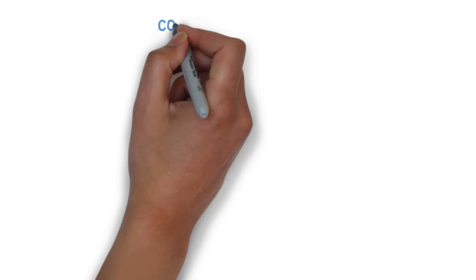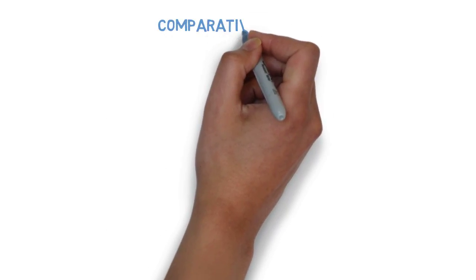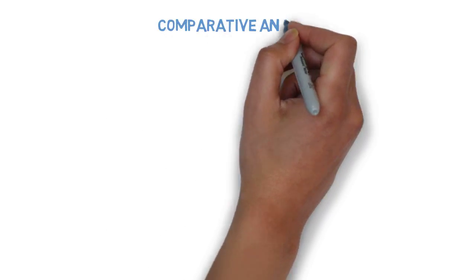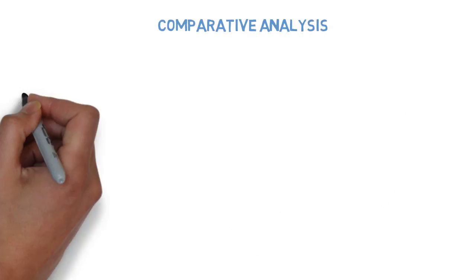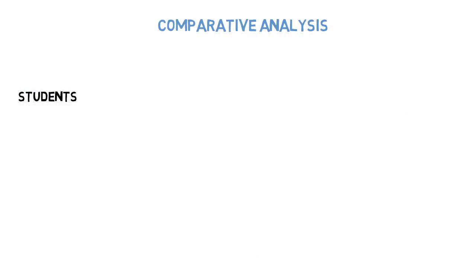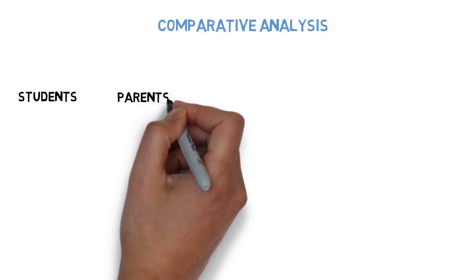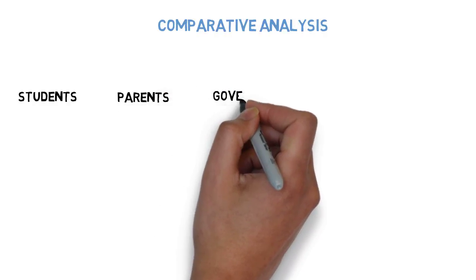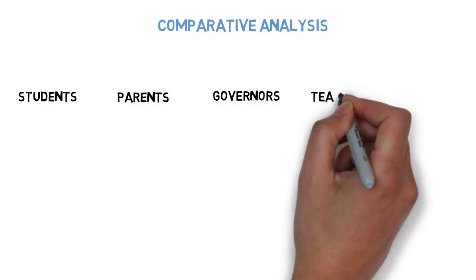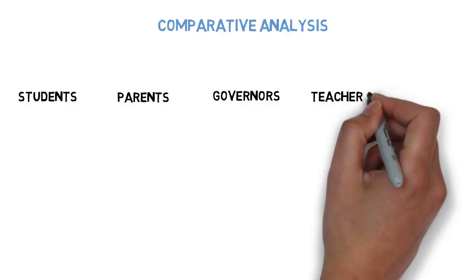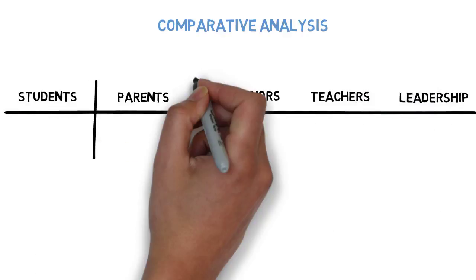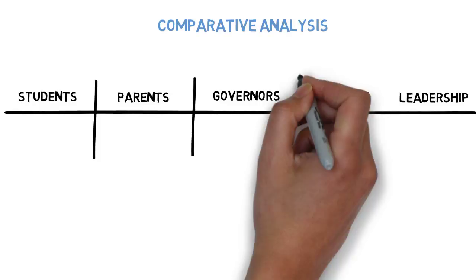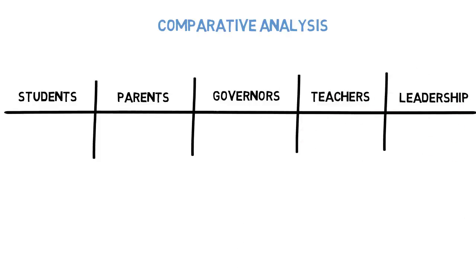Then we carry out a comparative analysis. That means we compare what different groups believe about your school compared to the leadership team. Why is this important? Because when different people think different things about the same aspect of your school, something is going wrong.